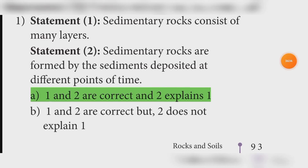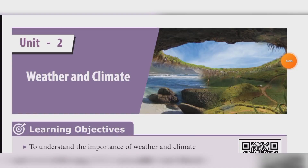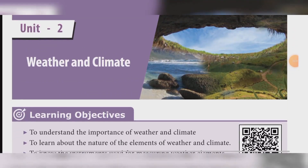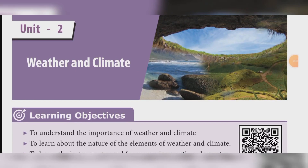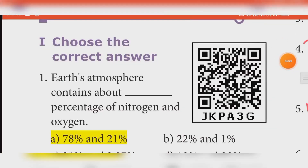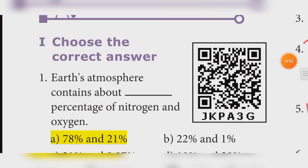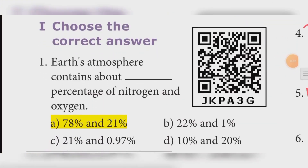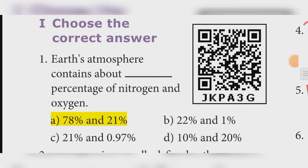Unit 2, Weather and Climate. Choose the correct answer. First: Earth's atmospheric content — percentage of nitrogen and oxygen. Answer: Option A — 78% nitrogen and 21% oxygen.